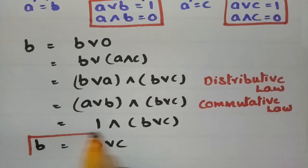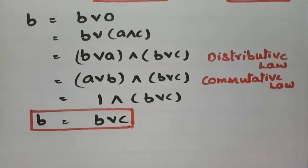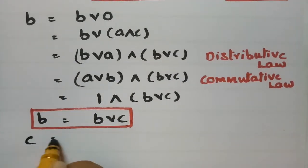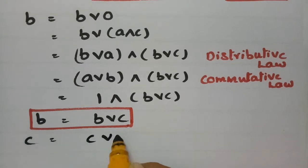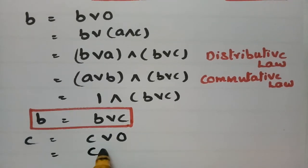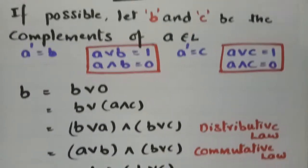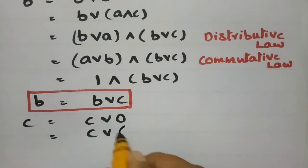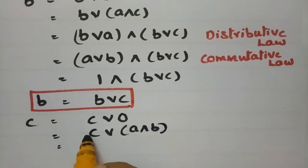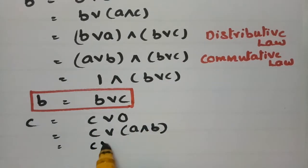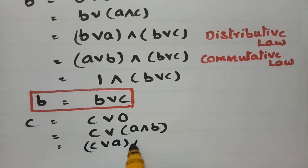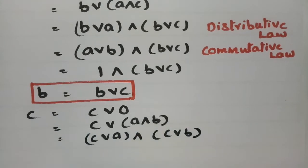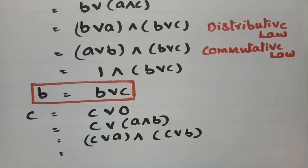Next, consider the element C. C can be written as C join 0. In place of 0, I am writing A meet B, since A meet B equals 0. So C = C join (A meet B). Applying the distributive law, this becomes (C join A) meet (C join B).